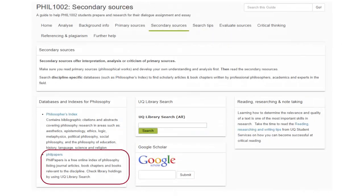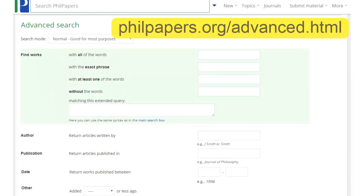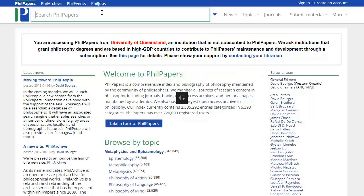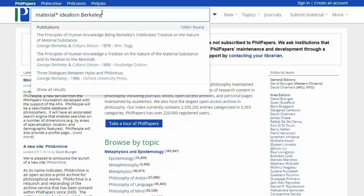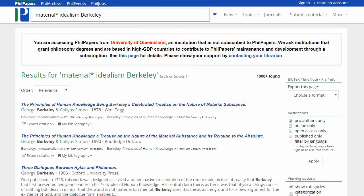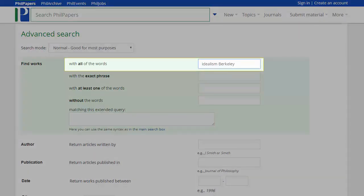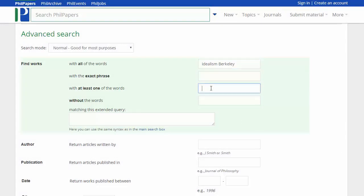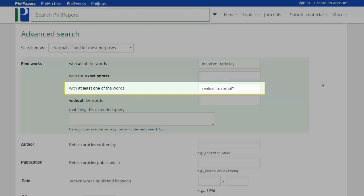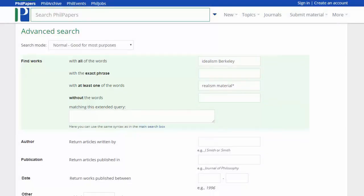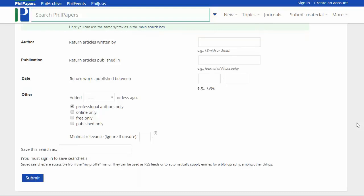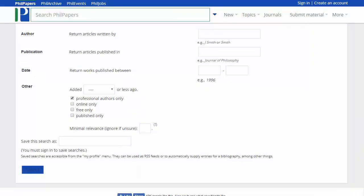Phil Papers is a free online index for philosophy. You can find this database on the Library Guide or go directly to the website philpapers.org/advanced.html. The basic search on Phil Papers doesn't work well. It defaults to searching for any of the terms you enter and can result in a large number of irrelevant results. It's best to use the Advanced Search. Use the With All the Words field to enter your terms. Other search fields are also available. Searching with at least one word allows you to search for synonyms. To ensure you're sourcing scholarly material, have the Professional Authors Only option ticked.